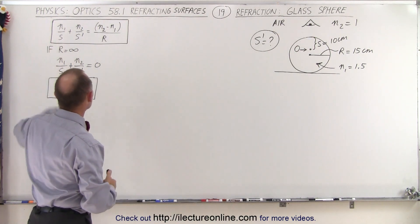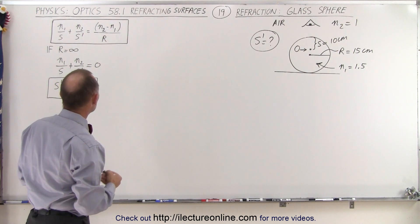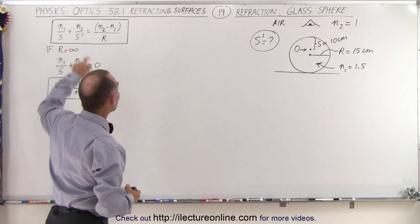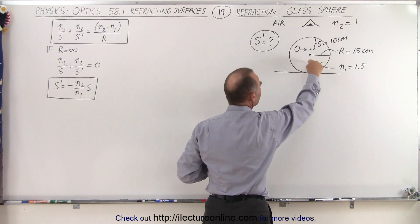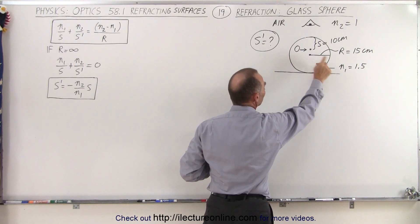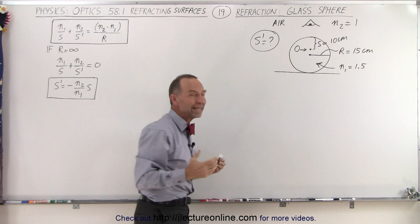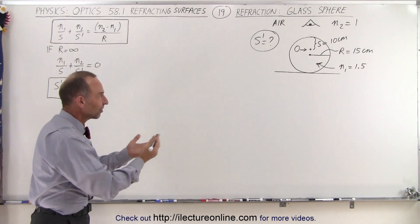n1 is associated with the object, so that's the index of refraction of the glass, 1.5. n2 is the index of refraction of the air outside the glass.